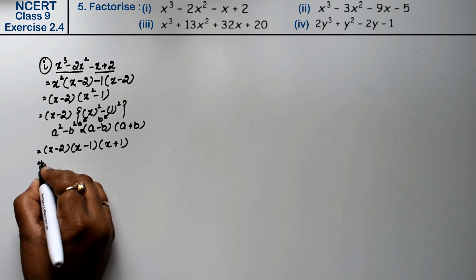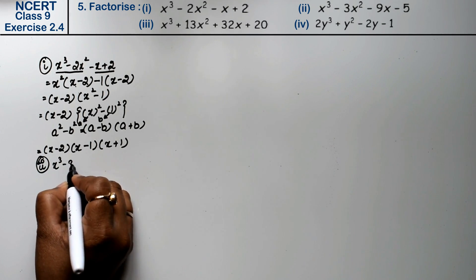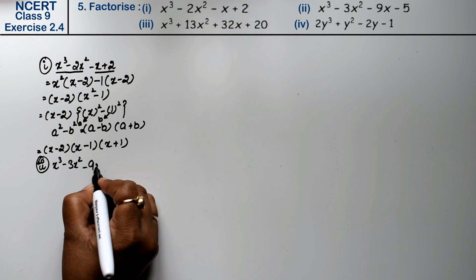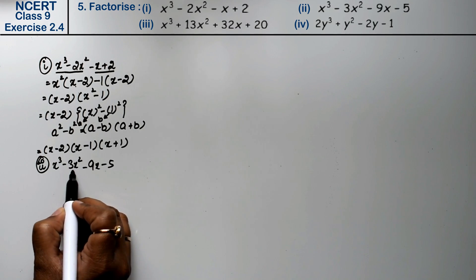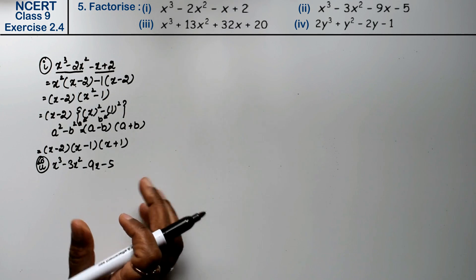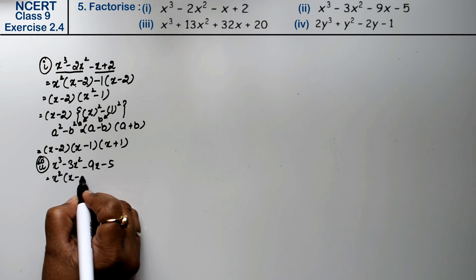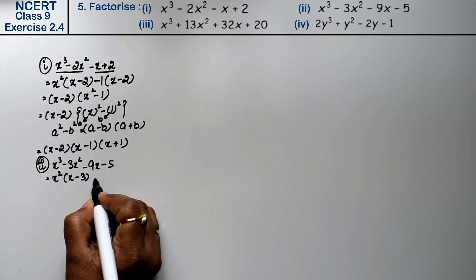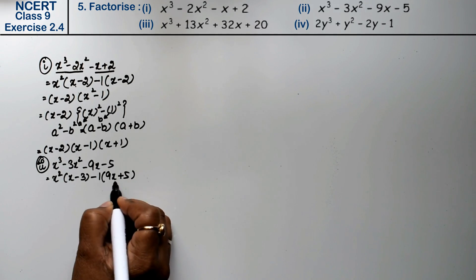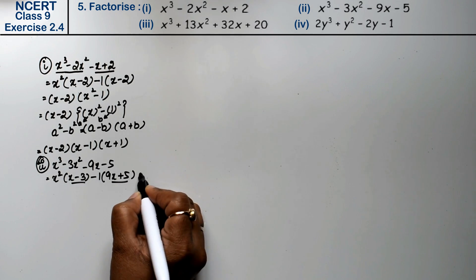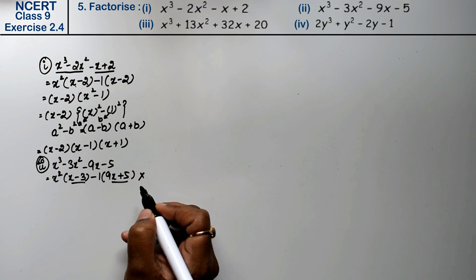Let's do the second part. The second part is x cubed minus 3x squared minus 9x minus 5. If you look at this, there is no obvious common factor between all four terms. Taking x squared from the first two gives x minus 3, but the last two terms don't match. So in that case, we use the factor theorem.